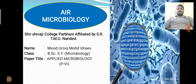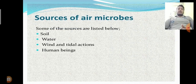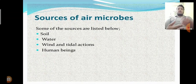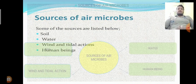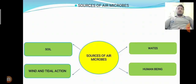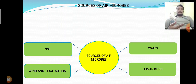Next, the sources of air microbiology. What is the meaning of sources? Suppose something is transferred from one region to another — that is simply called a source. These are the different sources of air microbiology, and they are categorized into four types: soil, water, wind and tidal actions, and human beings. These are the main sources.